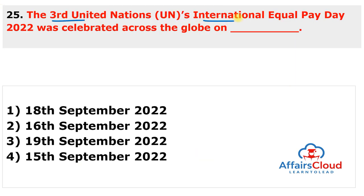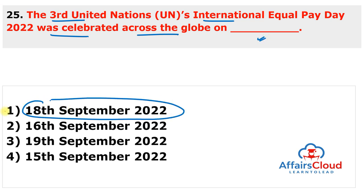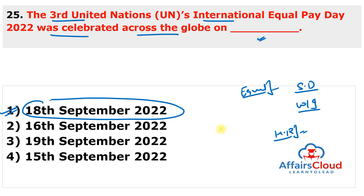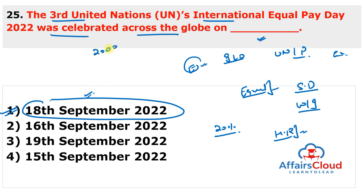The third United Nations International Equal Pay Day 2022 was observed on 18th September 2022 to represent efforts towards equal pay for equal work and equal value, and to eliminate gender discrimination in employment. Globally, women are paid around 20% less than men. EPIC — the Equal Pay International Coalition — led by the International Labour Organization, UN Women and partners, works to achieve equal pay everywhere. This day was first observed in 2020.